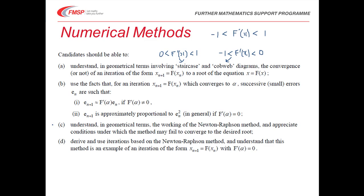In part C, we've got to understand in geometrical terms the working of Newton-Raphson and appreciate the conditions under which the method may fail to converge. The most likely problem is turning points — it does not converge at a turning point. The other situation is if there is a discontinuity in the graph. In part D, we derive and use iterations based on Newton-Raphson, and understand that this method is an example of an iteration where F'(α) is equal to 0 — so it's actually a quadratic approximation.